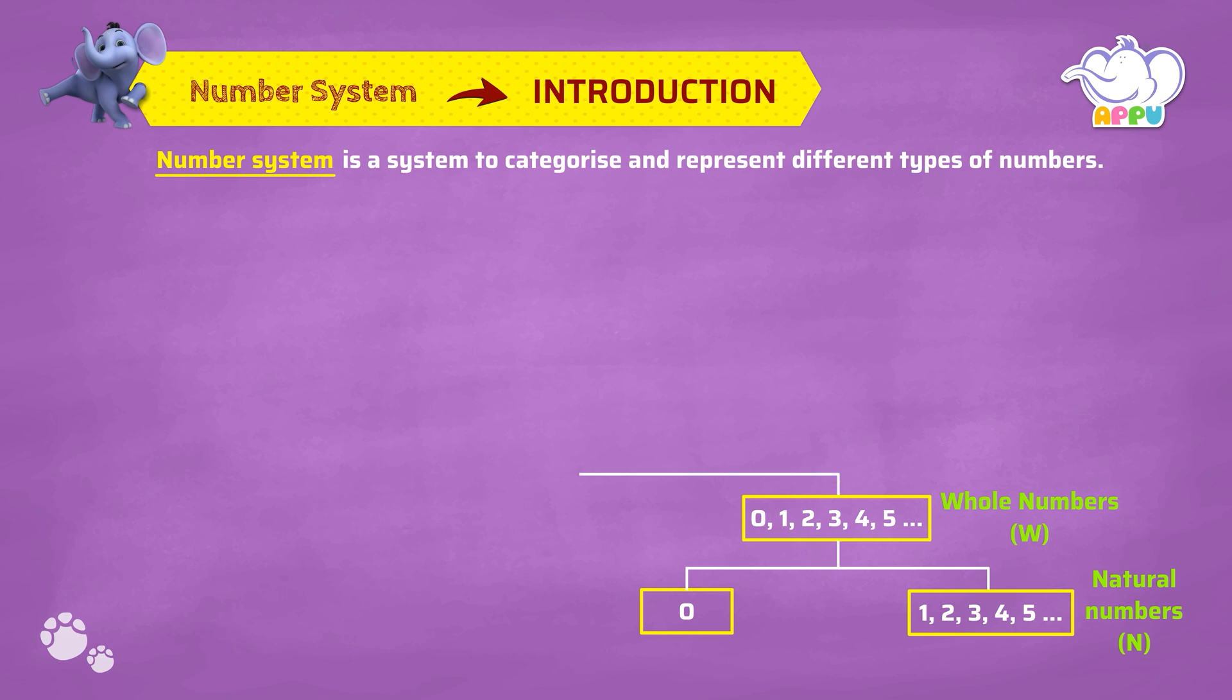Negative numbers are many. Minus 3, minus 2, minus 1 are a few examples. The whole numbers along with negative numbers are integers denoted by capital Z.